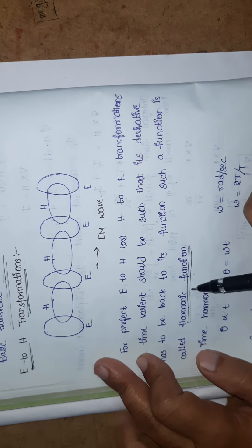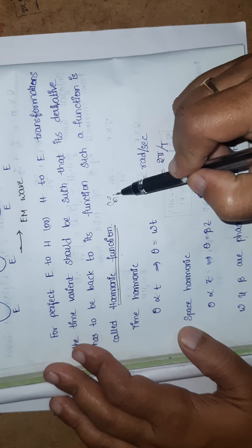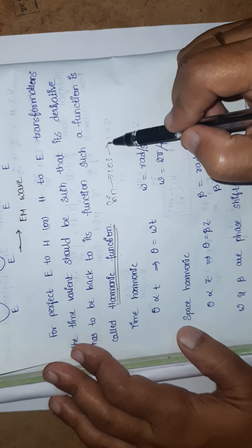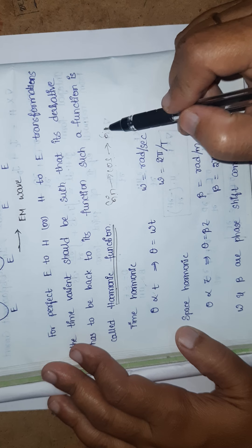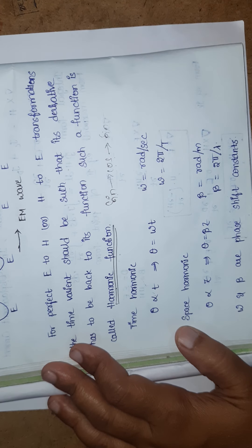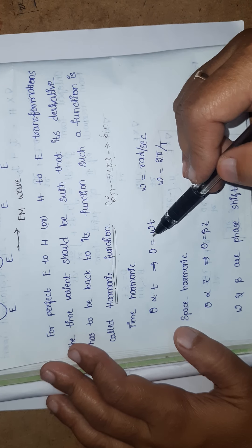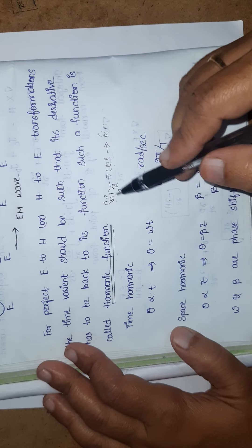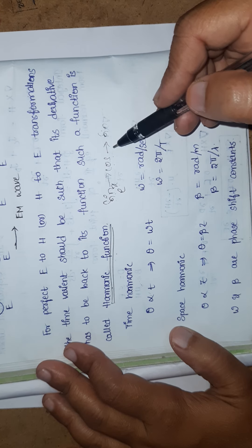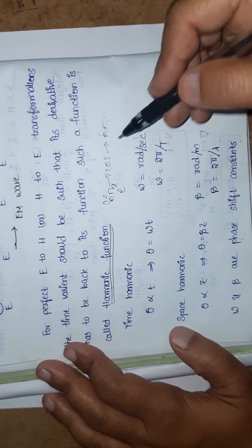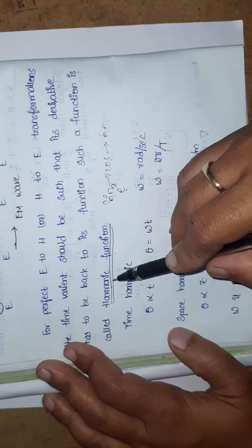A harmonic function example: sine and cosine signals. Differentiating sine gives cosine, differentiating cosine gives sine — the same function repeats. That is why sine and cosine functions are harmonic functions. Similarly, exponential functions: differentiating e^x gives e^x again — the same function. So we can consider either exponential functions or sinusoidal functions as harmonic functions.